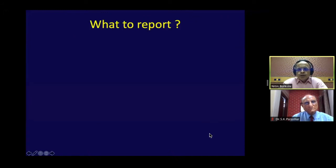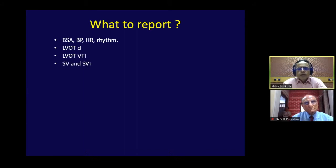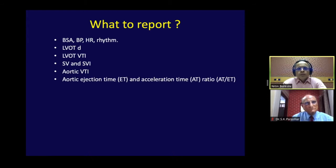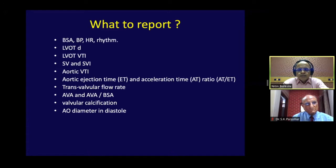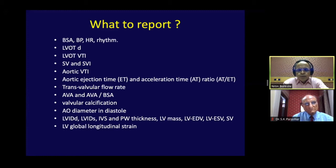What to report in the echo report: body surface area and BP at time of recording, LVOT diameter (aortic annulus), LVOT VTI, stroke volume index, aortic VTI, aortic ejection time, AT/ET ratio, transvalvular flow rate, aortic valve area corrected to BSA, valvular calcification, aortic diameter at sinotubular junction in diastole, all LV dimensions including LV mass, LV global longitudinal strain, ejection fraction, and diastolic function. This entire set must be reported.